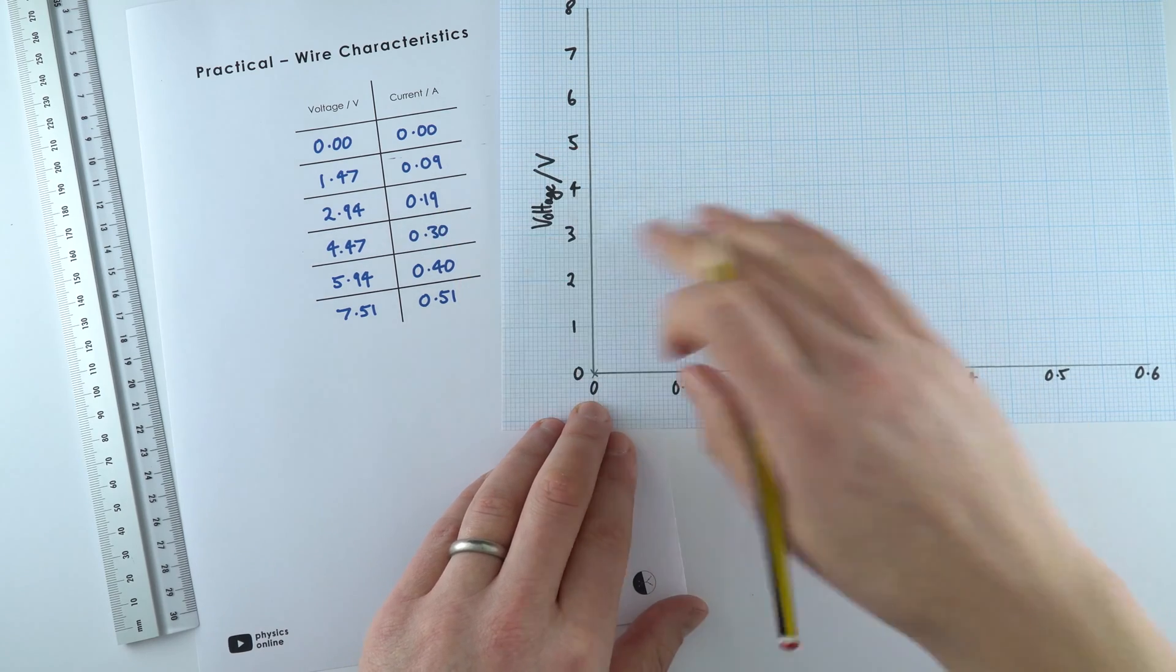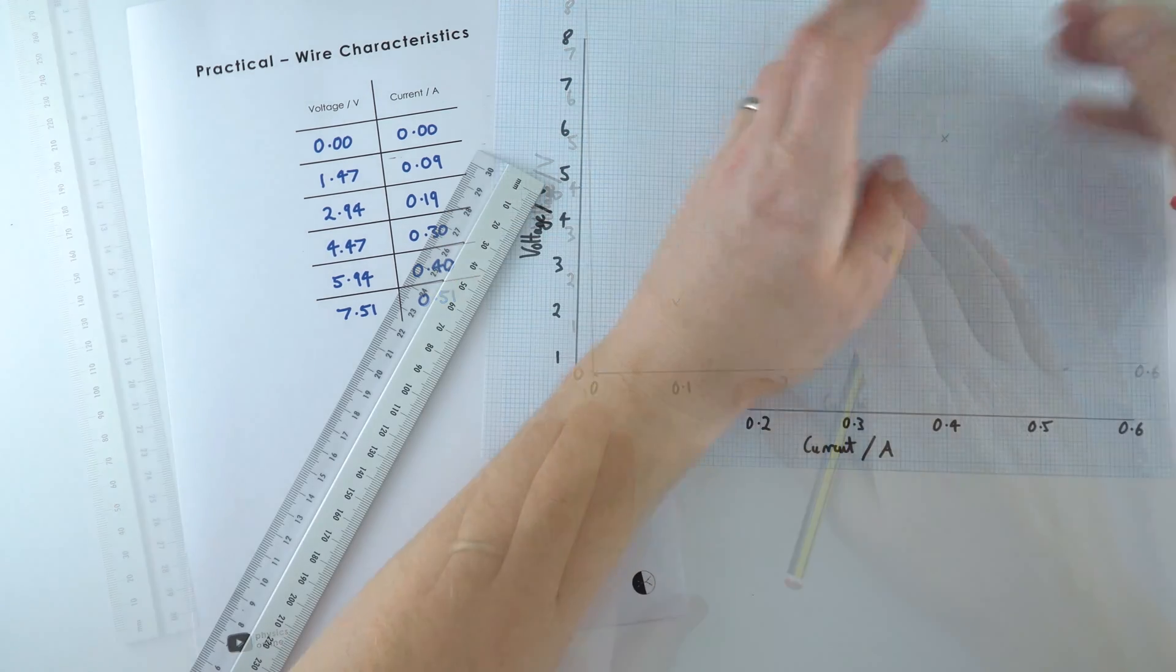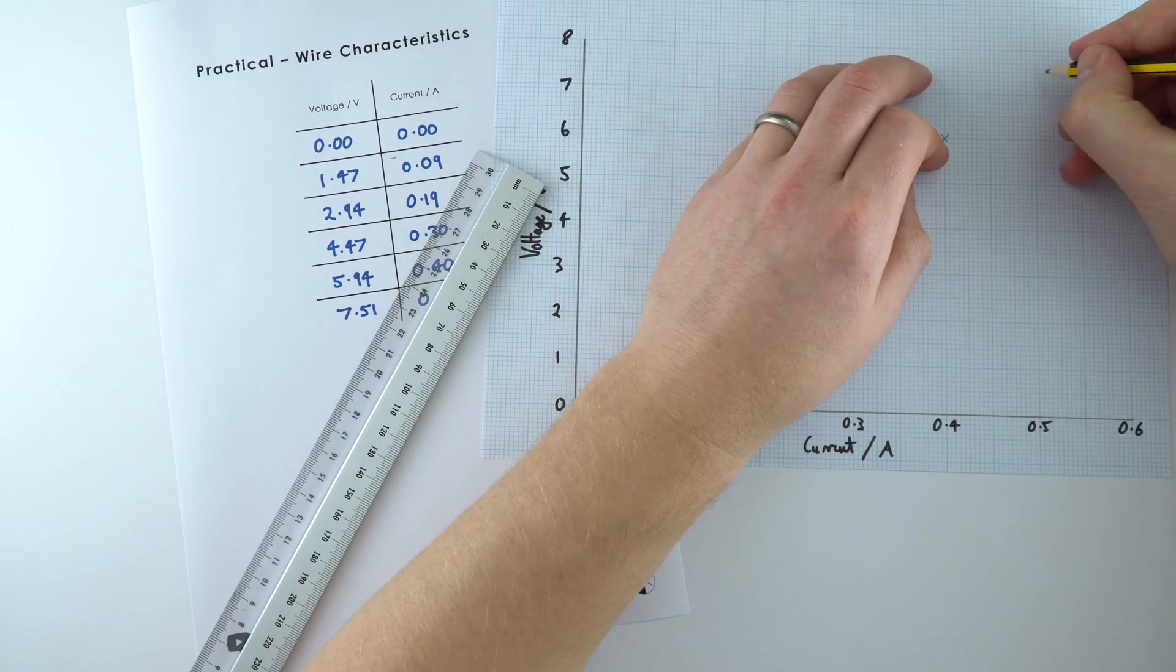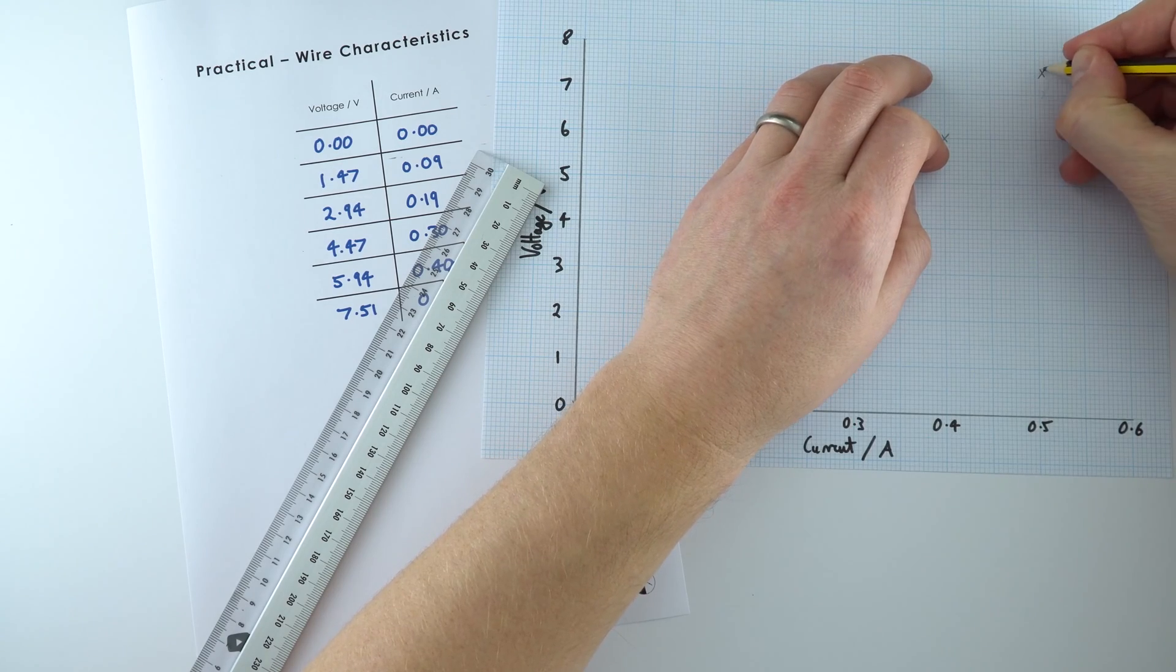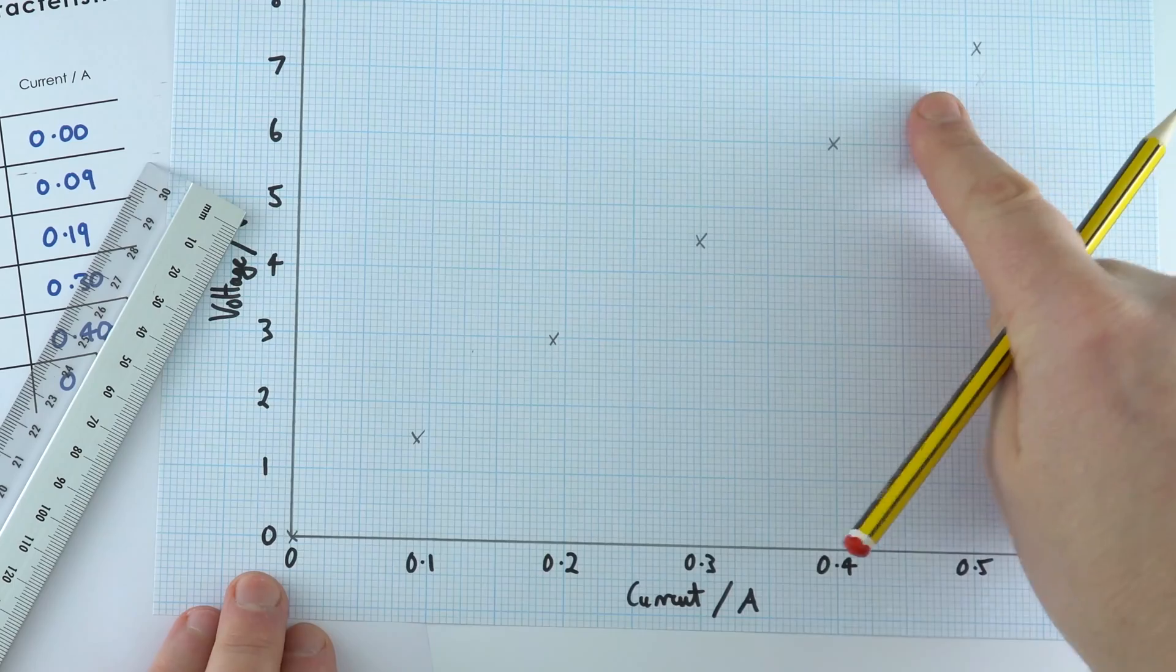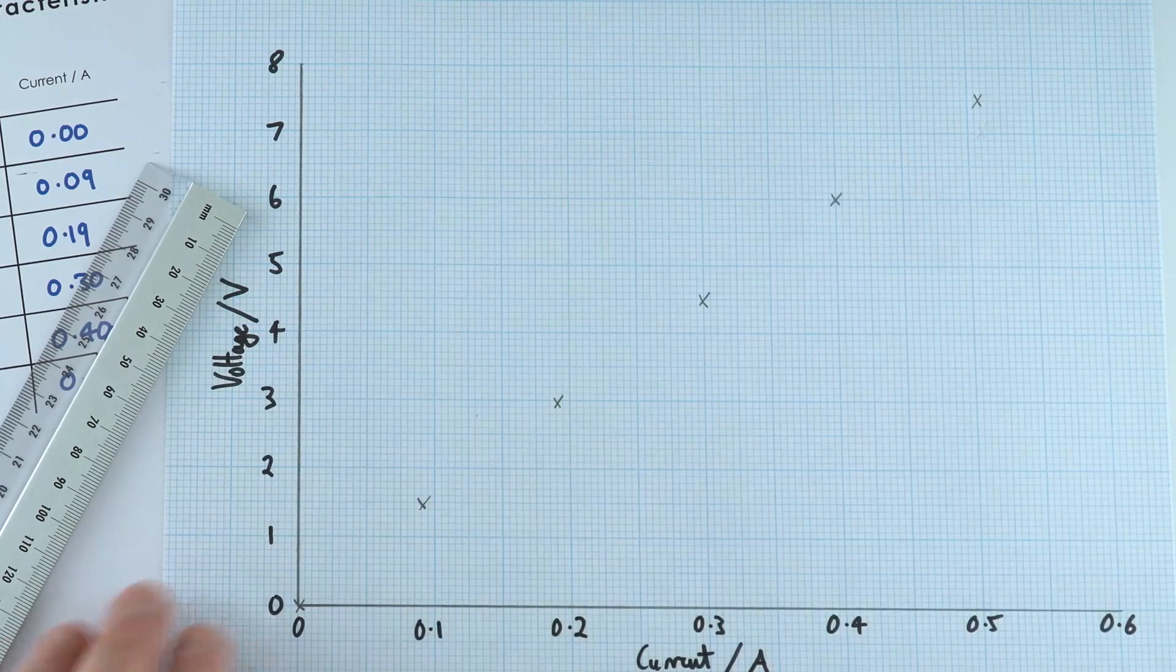And now I'm just going to put in the rest of these points. OK, I just made a small mistake with that last point over there. So this is the data that we've got. We can see there's this linear relationship.